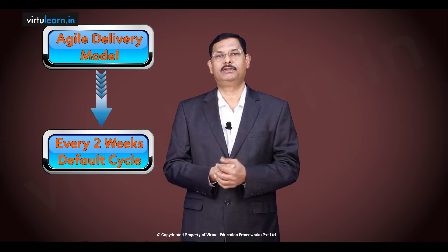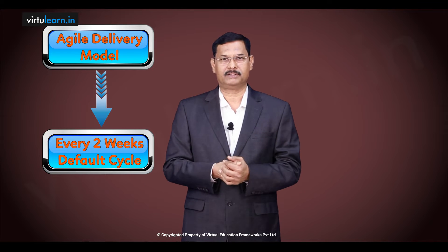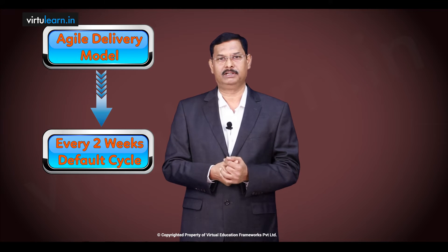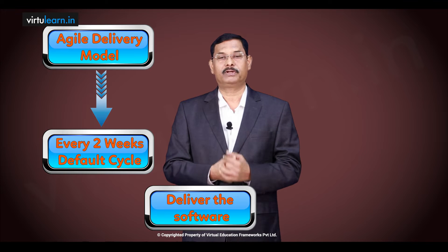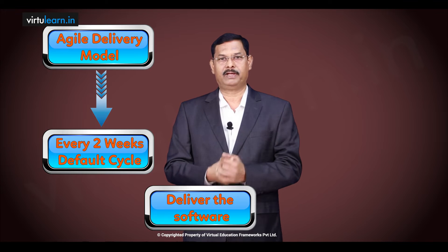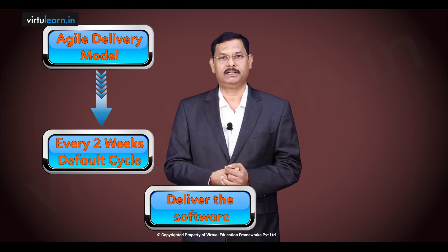In agile, we deliver working software that is valuable to our customers, usually every two weeks. Two weeks is the default cycle period for an iteration or sprint, as we call it in agile. So in every two weeks, we make some working software that's valuable to our customers.